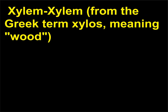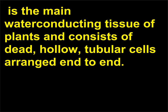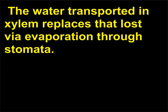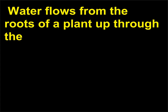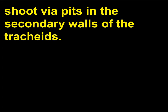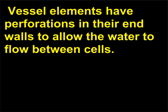Xylem — from the Greek 'xylos,' meaning wood — is the main water-conducting tissue of plants and consists of dead, hollow, tubular cells arranged end to end. The water transported in xylem replaces that lost via evaporation through stomata. The two types of water-conducting cells are tracheids and vessel elements. Water flows from the roots of a plant up through the shoot via pits in the secondary walls of the tracheids. Vessel elements have perforations in their end walls to allow the water to flow between cells.